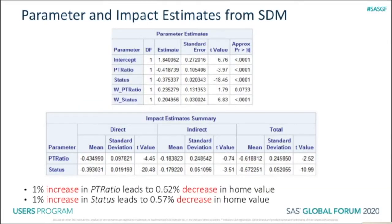Now let's look at parameter and impact estimates from SDM. The first table shows you the parameter estimates from SDM, whereas the second table summarizes impact estimates for two explanatory variables. The average direct impact for PT ratio is negative 0.435, which is different from its point estimate of negative 0.419 in the parameter estimates table. Moreover, the average indirect and total impacts for PT ratio are negative 0.184 and negative 0.619 respectively. As a result, we conclude that a 1% increase in pupil-teacher ratio in a census tract leads to a total of 0.62% decrease in home value. Similarly, we conclude that a 1% increase in the percentage of lower status population in a census tract leads to a total of 0.57% decrease in home value.